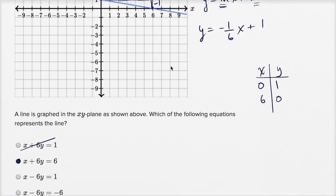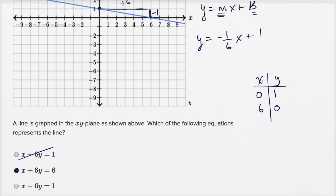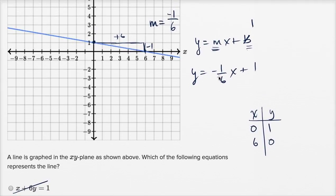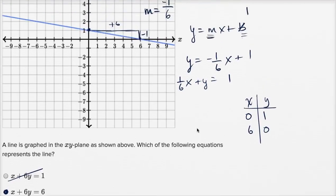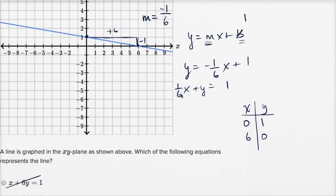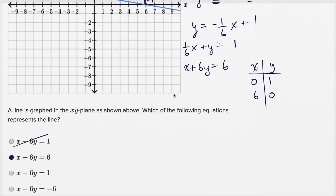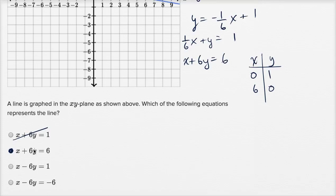And then we could convert to the forms that we have here. So let's see, we could add one-sixth x to both sides, and you're going to get one over six x plus y is equal to one. And that's not quite what we have here. All the x coefficients, all the coefficients on x are just one. So we could multiply both sides of this times six, and we would get x plus six y is equal to six, which is exactly the choice that we picked.